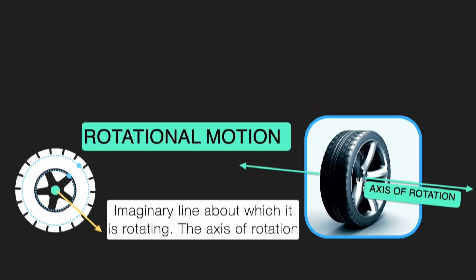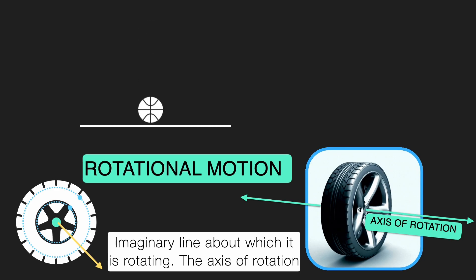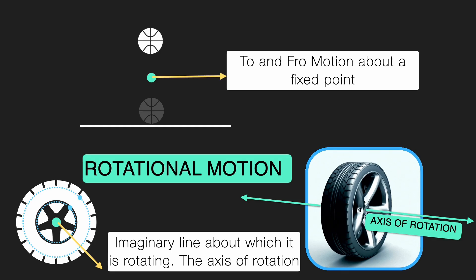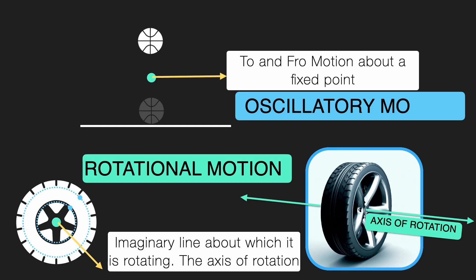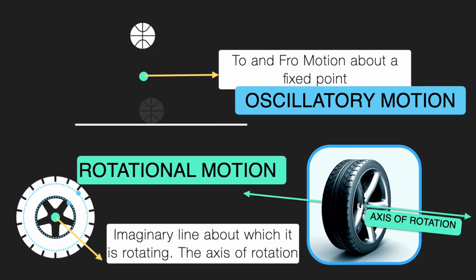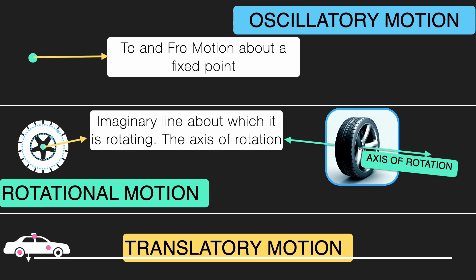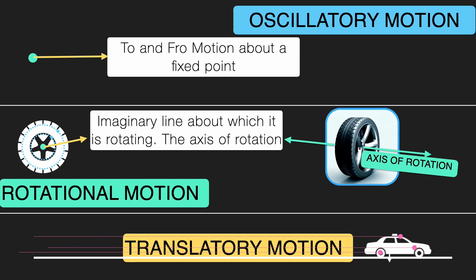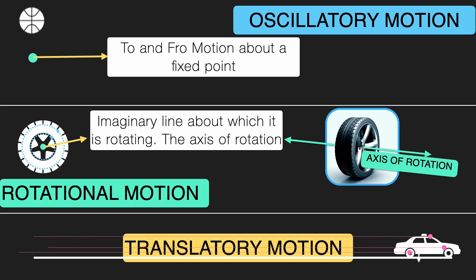Now let's move on to the third type of motion and imagine a ball bouncing back and forth. It is moving to and fro about a fixed point — this is called oscillatory motion, a repetitive back-and-forth movement about a fixed position. So to sum it up: when all parts of the object move in a straight line like a moving car, that's translatory motion; when all points of the object rotate around a fixed axis like the tire, that's rotational motion; and when the object moves to and fro about a fixed point like a swing or a bouncing ball, that is oscillatory motion.